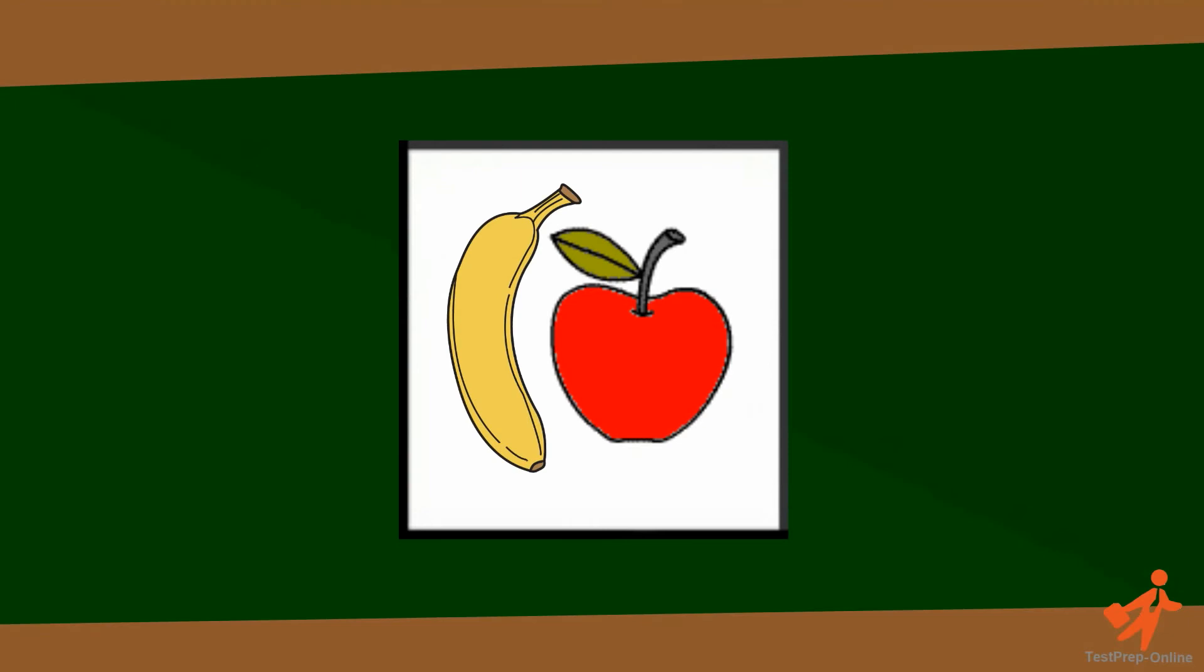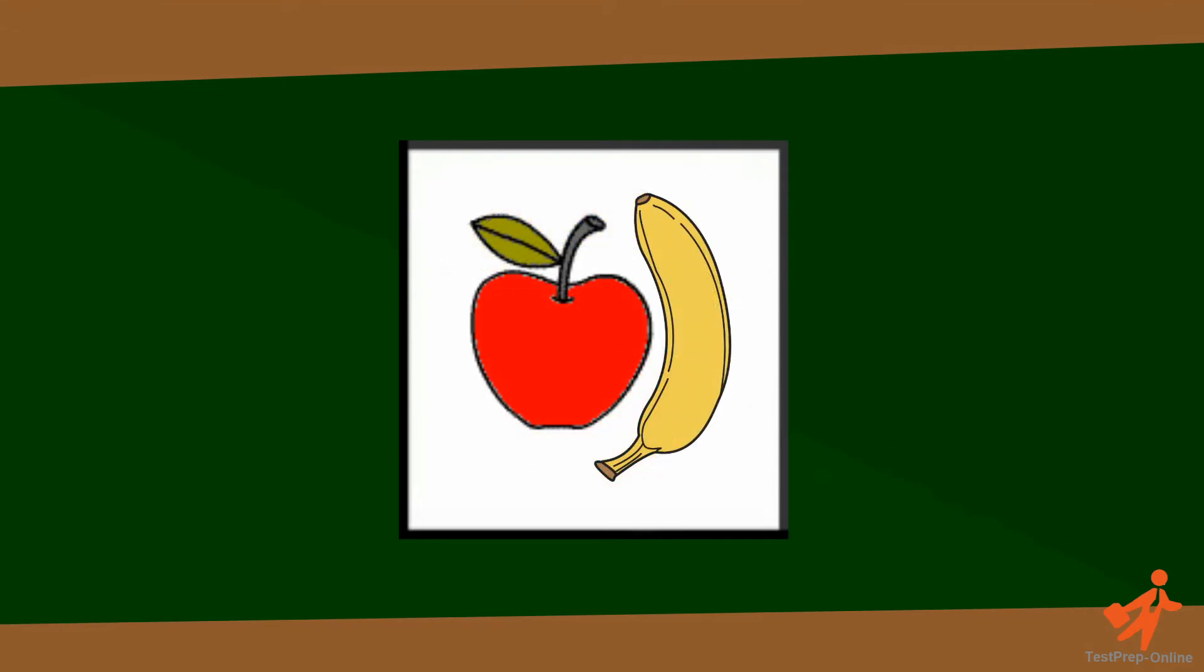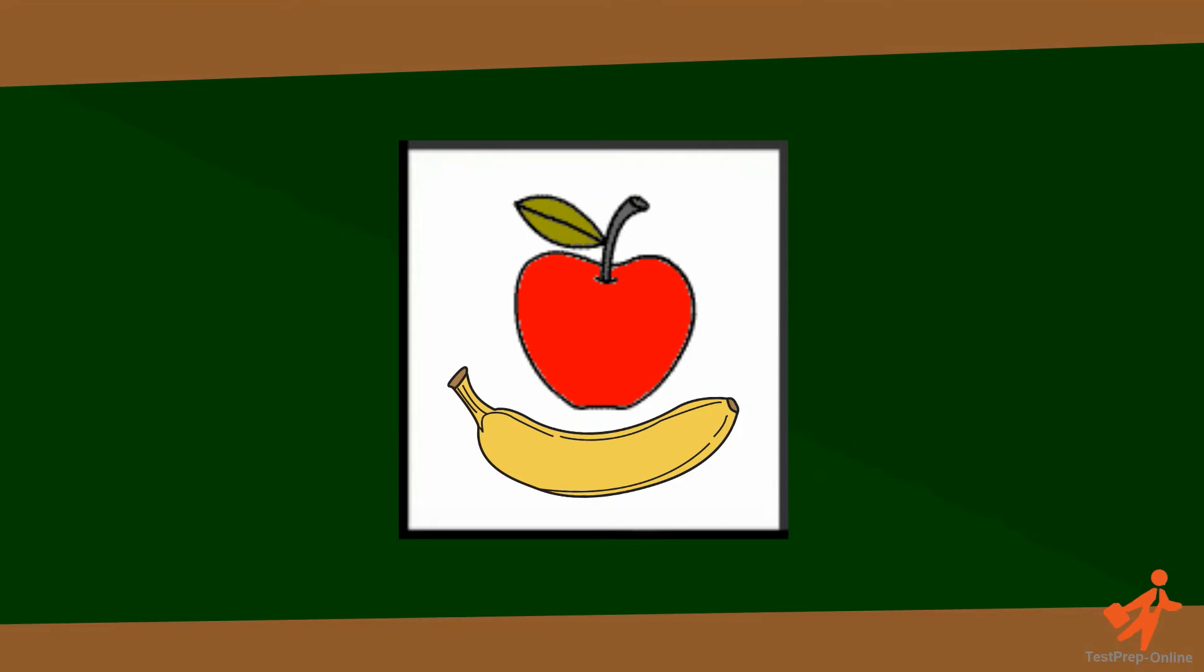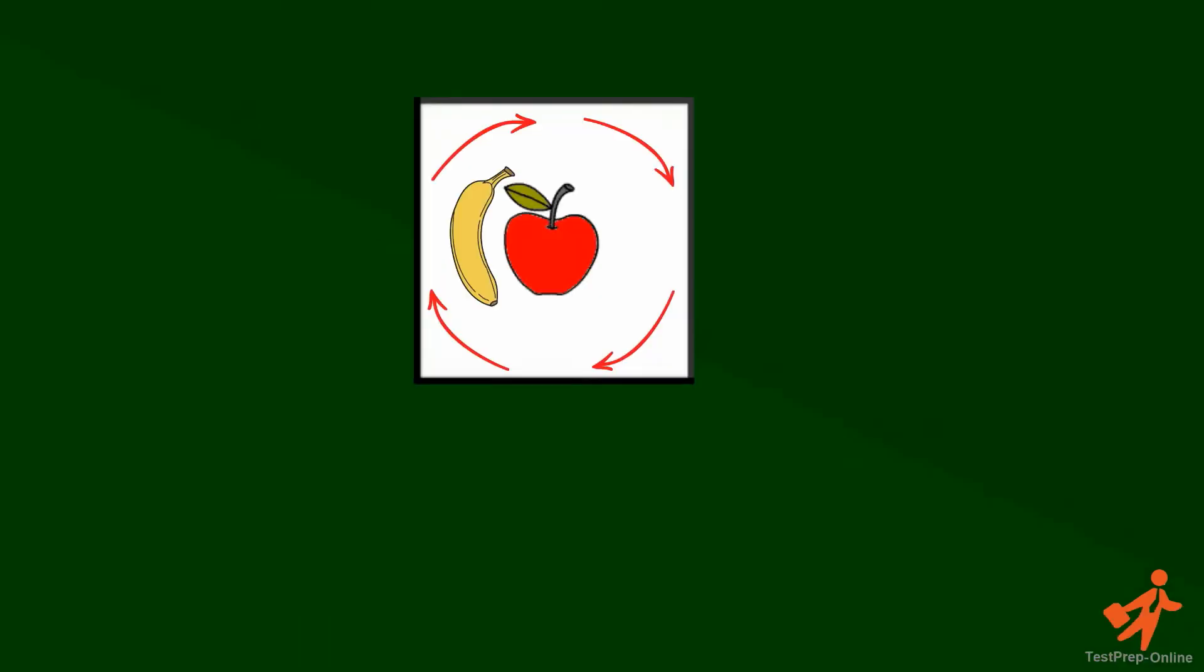In the first picture the banana is to the left of the apple. In the second picture it's above it. Then it's to the right of the apple. And finally the banana moves below the apple. To find the pattern it would be easier to imagine the series of pictures together as a video. When we see it this way it's clear to us that the banana goes around the apple clockwise.